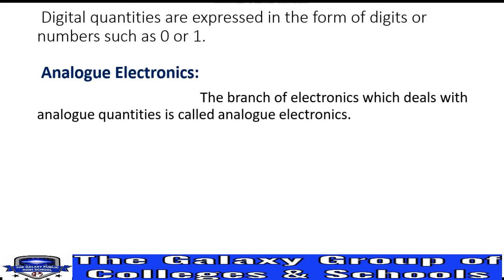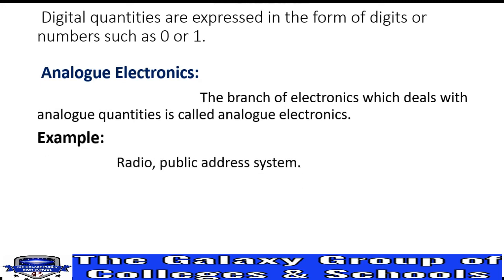Before we discuss analog quantities further, we will define analog electronics. Analog electronics is the branch of electronics which deals with analog quantities. Examples of analog electronics include radio and the public address system. A public address system uses a microphone — we speak into the mic so that many people can hear the voice, and the sound is amplified.